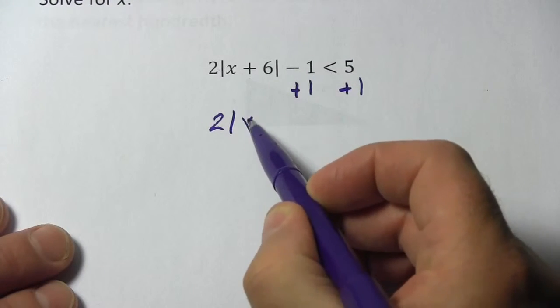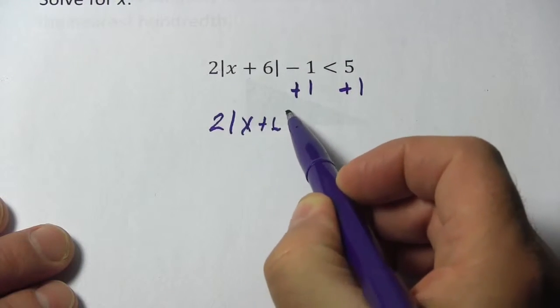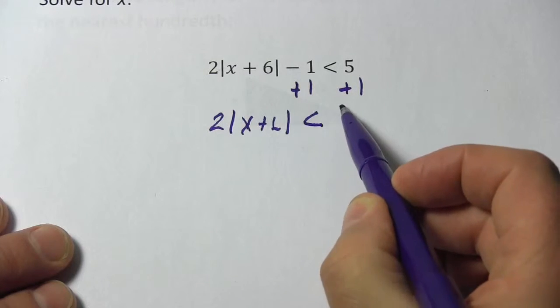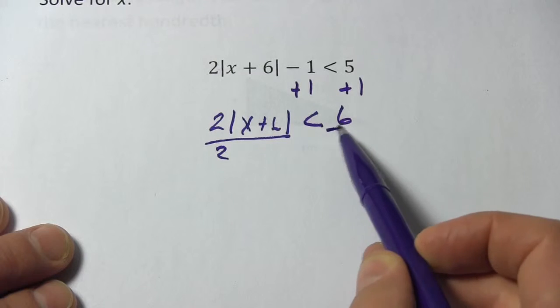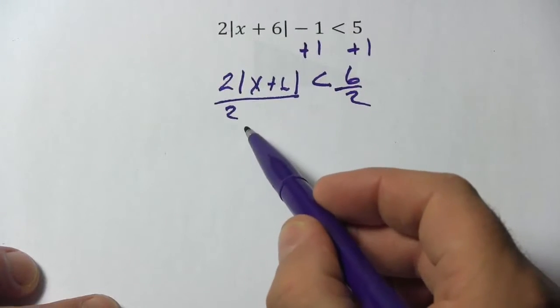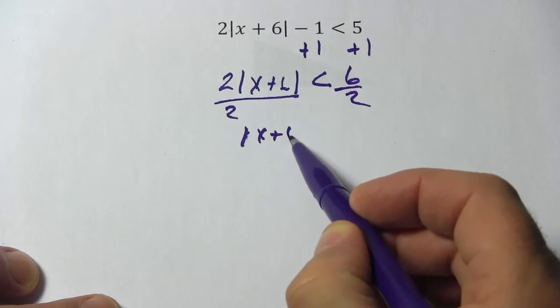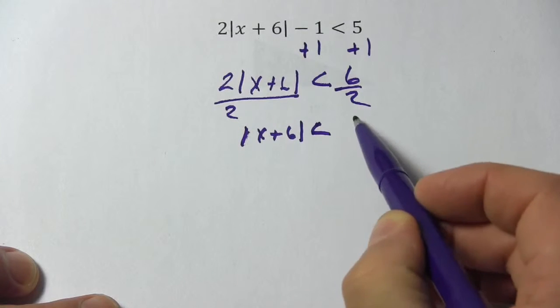Now we've got 2 times the absolute value of x plus 6 is less than 6. And then we'll divide both sides by 2 to get rid of that 2. We've got absolute value of x plus 6 is less than 3.